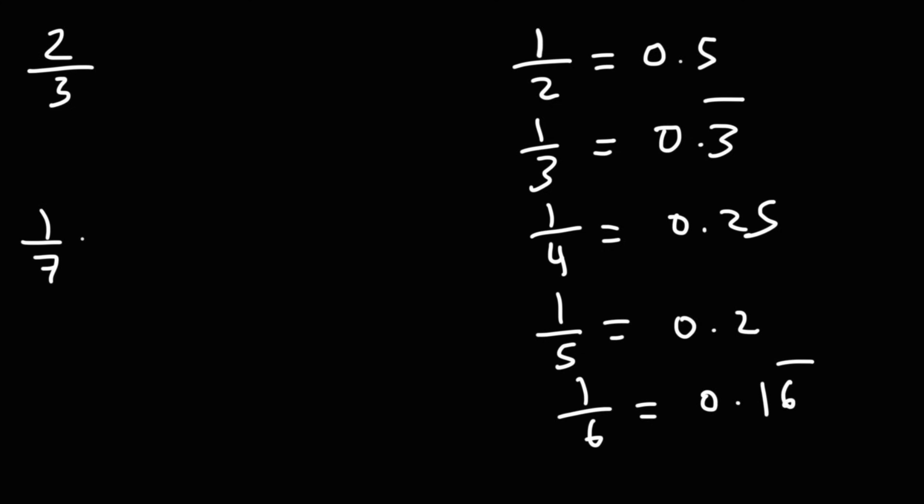1 over 7 is not very common, but I'll go ahead and write it here for those of you who are interested. It's 0.142857. But if I have something with a 7 in the bottom, I'm just going to round this to 0.143, you know, just to get an approximation.